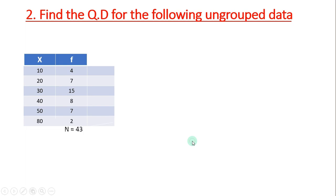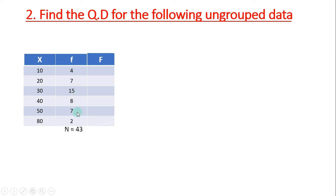Now, one more example with ungrouped data where frequency is given. Scores are 10, 20, 30, 40, 50, 80, and the corresponding frequencies are 4, 7, 15, 8, 7, 2. The total n is 43.